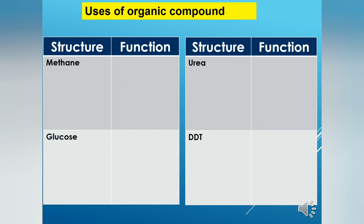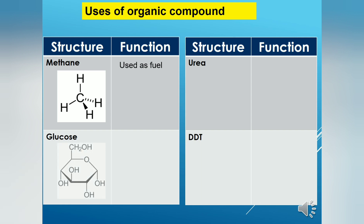Next, we are going to discuss some examples of organic compounds and their functions. Methane is a main component of natural gas, which is burnt as fuel to generate electricity. Glucose is a source of energy in our body to support the activities of cells.